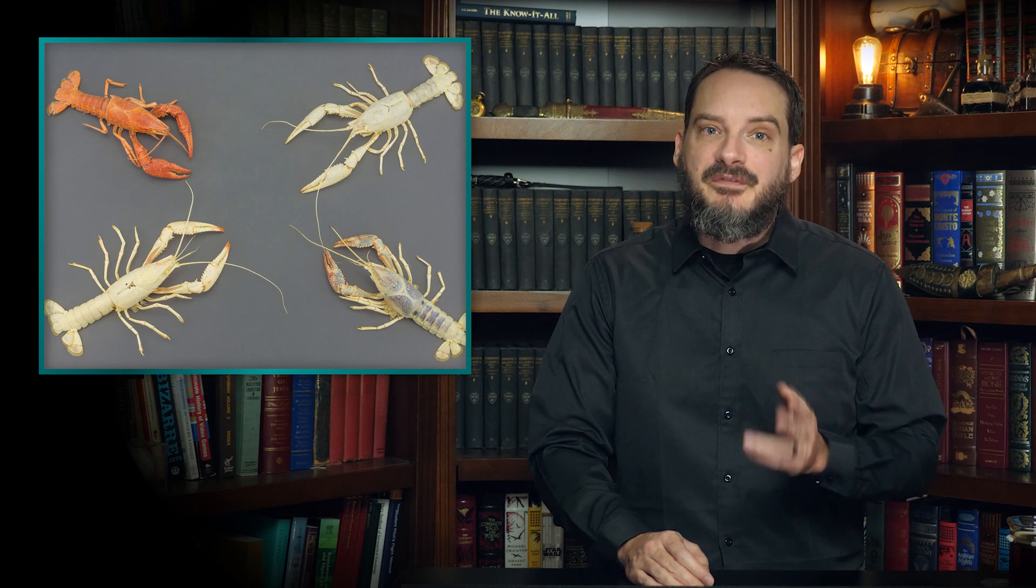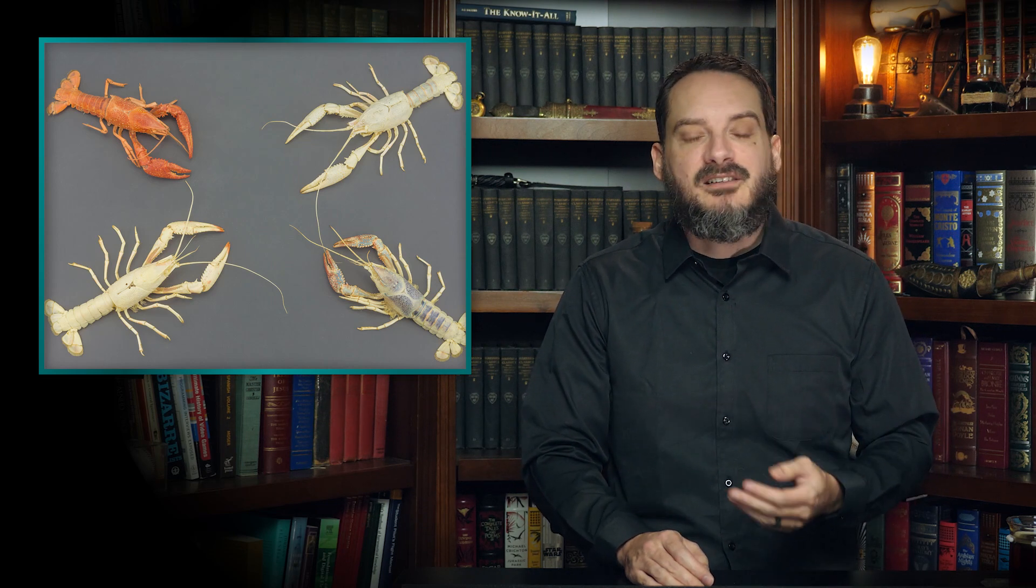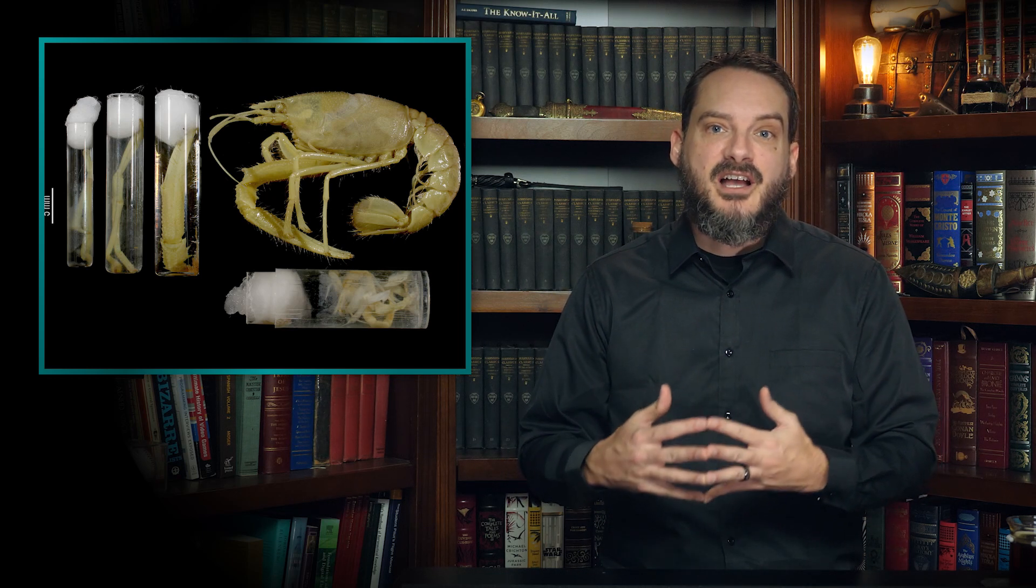But just because lobsters can potentially continue to grow and molt up until their death, that does not mean they always do so. Even if they have sufficient food available in ideal environmental conditions, elderly lobsters have been observed to stop molting altogether, with the theory being that their bodies simply no longer have the capacity to do so, likely via lack of needed metabolic energy. This is a major problem for lobsters as it often leads to shell disease, a bacterial infection in the shell that can form scar tissue between the lobster and the shell. If they are able to molt again later, they potentially have the problem of scar tissue binding the inner body and the shell, which can cause the lobster to become stuck and die.